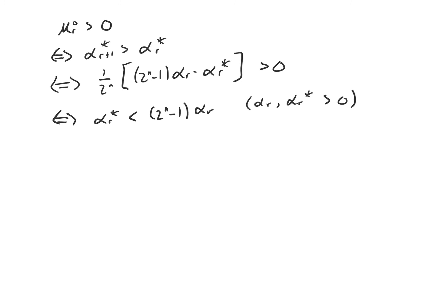So how many times do we have to apply the subroutine to make alpha sub r star large enough that we have a good probability of collapsing the system to the state x star upon measurement? Let's be concrete and say we want a 50% chance of collapsing to x star. That means alpha sub f star — where f is the number of times we apply the subroutine — is equal to 1 over root 2, because (1/√2)² = 1/2, the desired probability.